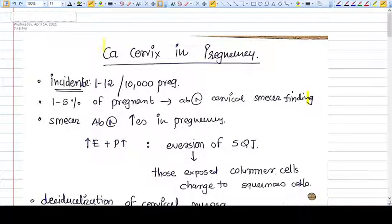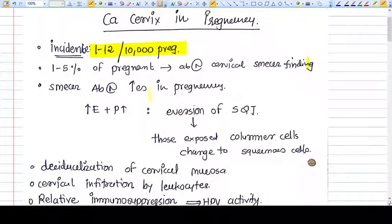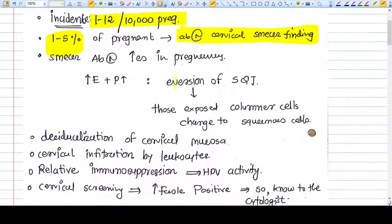Hello everyone, in this video we are going to talk about carcinoma cervix in pregnancy. The incidence of cervical cancer is about 1 to 12 per 10,000 pregnancies. Of all pregnancies, 1 to 5 percent have abnormal cervical smear findings if you do pap smears on all pregnant women.